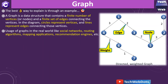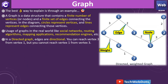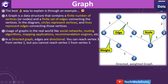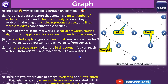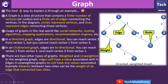In a directed graph, as you can see in the image, edges are directional. It means you can reach vertex 3 from vertex 1, but you cannot reach vertex 1 from vertex 3. That is the limitation of a directed graph.